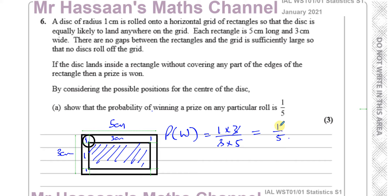So the area of the part that the center can land on is a rectangle of 1 times 3. The probability of winning is going to be 1 times 3 over the area of the whole rectangle, which is 3 times 5. So 1 times 3 over 3 times 5, and we get one-fifth. That's the probability of it landing in an area where it won't cross the edge of the rectangle. That's part A done.